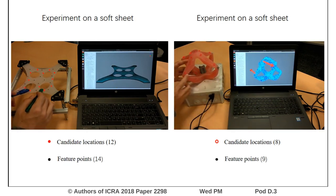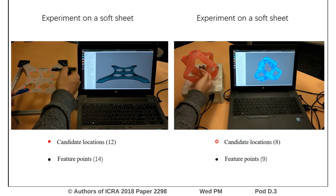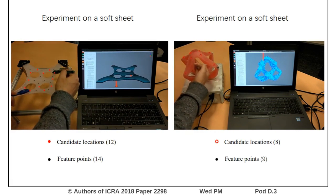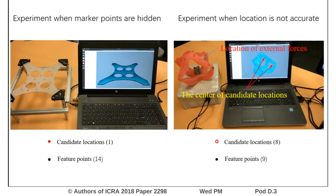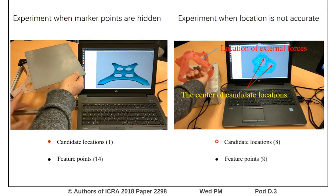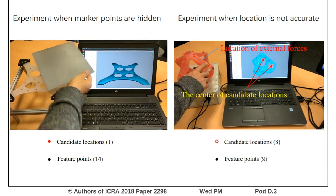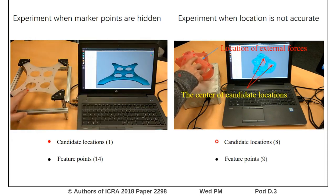The norm of the pseudo-inverse of the compliance matrix can be employed as an index to evaluate the sensing accuracy. A smaller index corresponds to a better distribution of markers and candidate locations. Usually, more feature points are needed so that when some of them are hidden, the remaining markers are still sufficient for sensing. If the real location is close to a pre-defined one, the algorithm can find the nearest location; otherwise, the real location can be estimated using the center of several candidate locations.